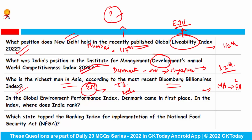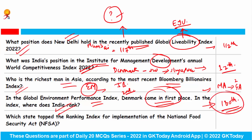In the Global Environment Performance Index, Denmark came in first place. What is India's rank? India is at the bottom position — our rank was 180th out of 180 countries ranked.